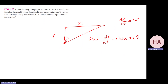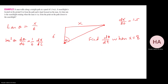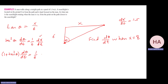I want to relate x, 6, and θ. The opposite over adjacent gives tan θ = x/6. Differentiating: secant²θ · dθ/dt = (1/6) · dx/dt. Using the identity 1 + tan²θ: (1 + tan²θ) · dθ/dt = (1/6) · 1.5 = 1/4. When x = 8, tan θ = 8/6 = 4/3.